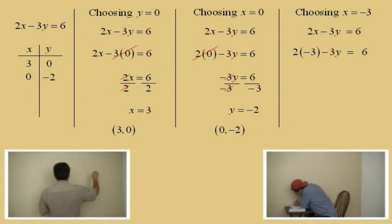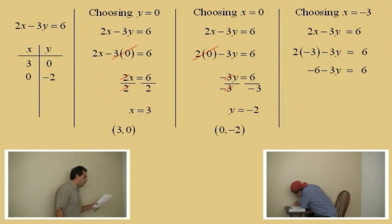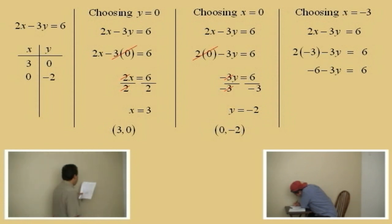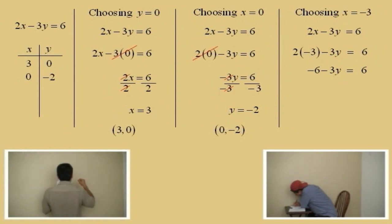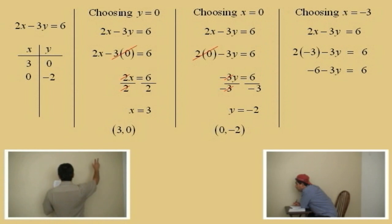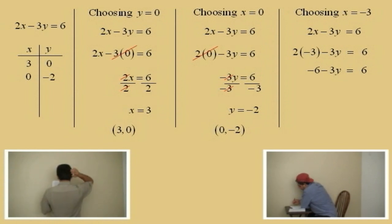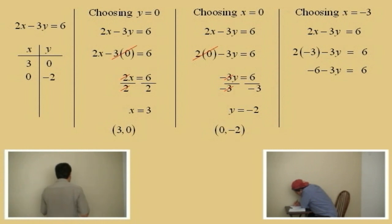Negative 6. Very good. Okay, negative 6 now. Subtract 3y equals 6. What we have to do is solve for y. So, we've done these equations before. I've got to get the y by itself. So, what's my next step? Add 6 to both sides. Okay, we add 6 to both sides.